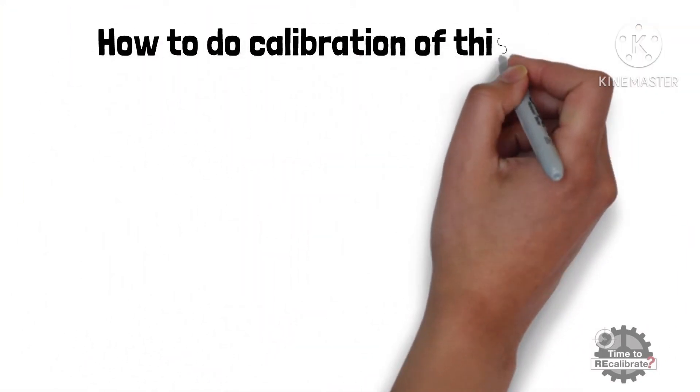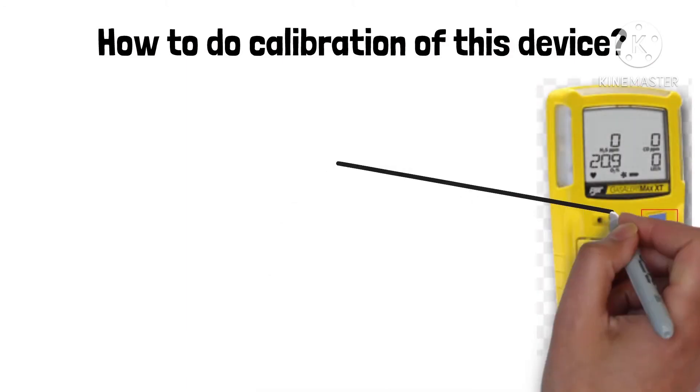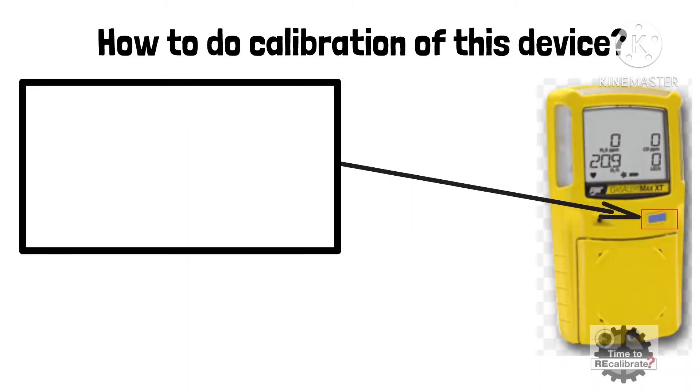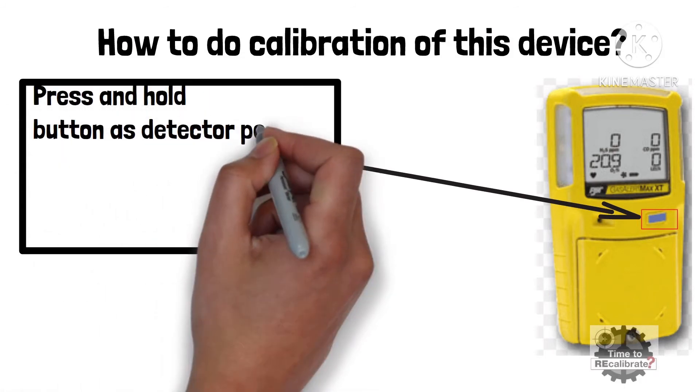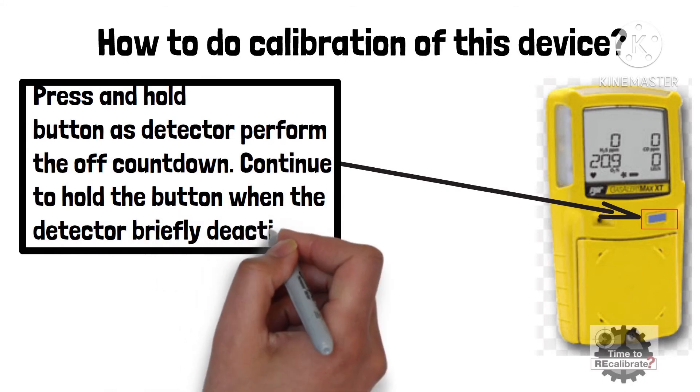How to do calibration of this model? First of all, press and hold push button as detector performs the off countdown. Continue to hold button when the detector briefly deactivates.